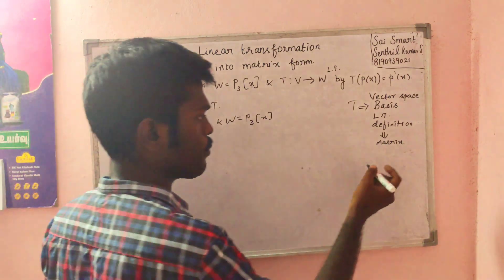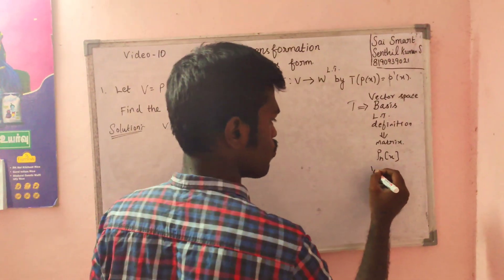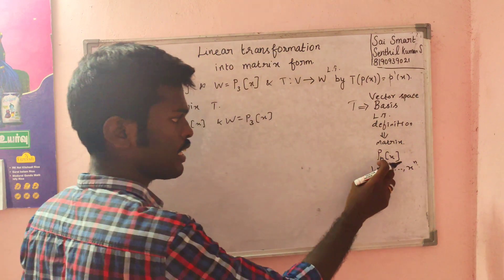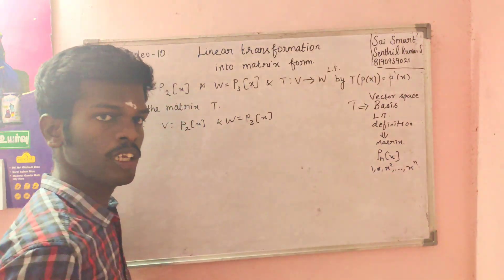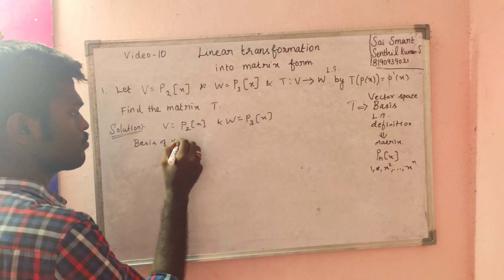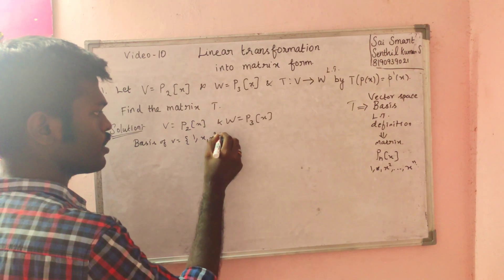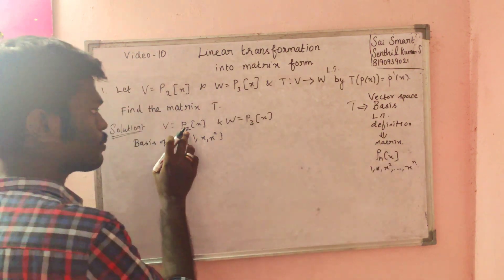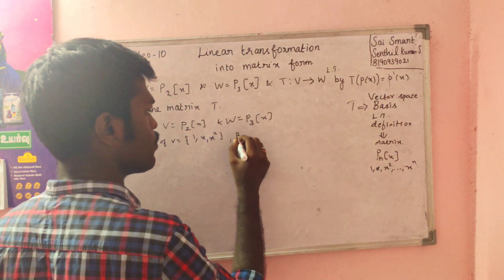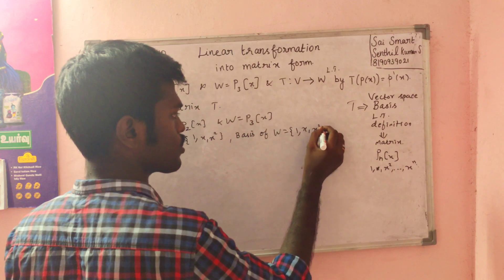P_n of x has basis: 1, x, x squared, and so on up to x to the power n — the nth degree basis. The basis of V is {1, x, x²}, and the basis of W is {1, x, x², x³}.